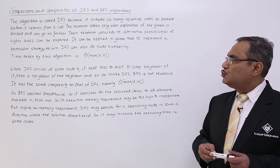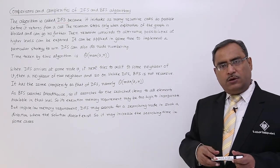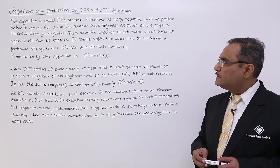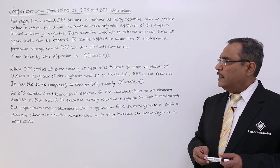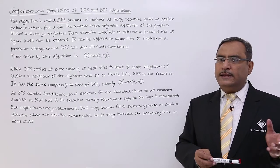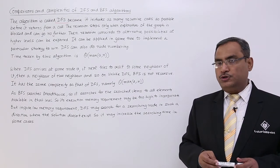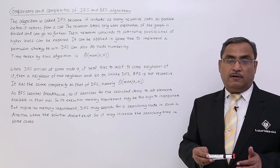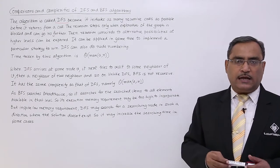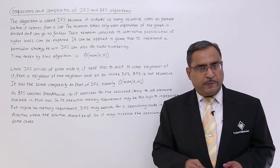DFS can also do node numbering. While traversing all these nodes, the node numbering can also be done by DFS. The time taken by this algorithm is big theta of max of A, N. A is the number of edges and N is the number of nodes. Depending upon the relative values between this A and N, whichever is maximum that will decide the complexity of this particular algorithm.